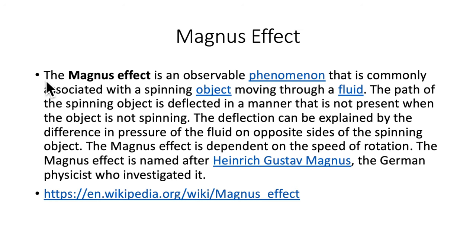This is something I took from Wikipedia, just a general description where the Magnus effect is an observable phenomenon that is commonly associated with a spinning object moving through a fluid. The path of the spinning object is deflected in a manner that is not present when the object is not spinning. The deflection can be explained by the difference in pressure of the fluid on opposite sides of the spinning object.